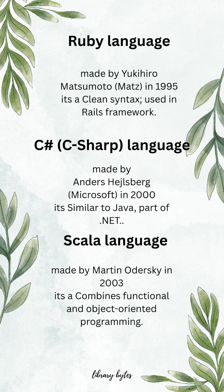Ruby, made by Yukihiro Matsumoto in 1995. It has a clean syntax and is used in the Rails framework. C#, made by Anders Hejlsberg at Microsoft in 2000. It's similar to Java and part of the .NET platform.